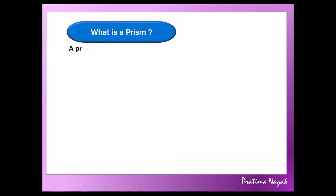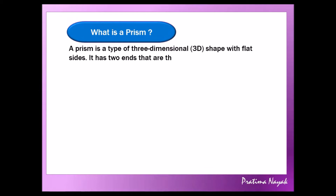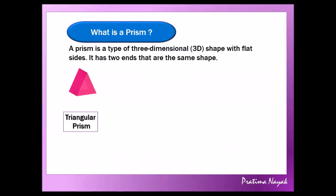What is a prism? A prism is a type of three-dimensional, or simply a 3D shape, with flat sides. It has two ends and they are of the same shape. First is the triangular prism, where its base is a triangle — both sides are triangles. Then is the rectangular prism — here the base is a rectangle, and the other end is also a rectangle. It is also known as a cuboid.